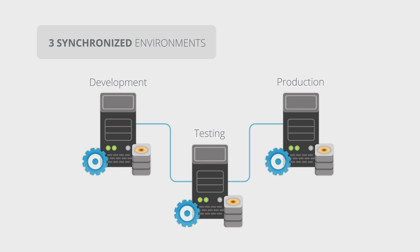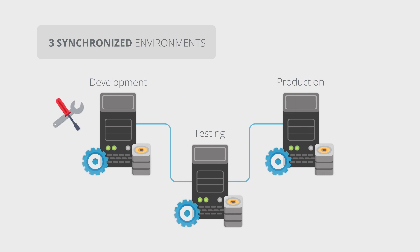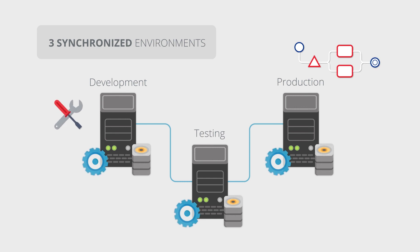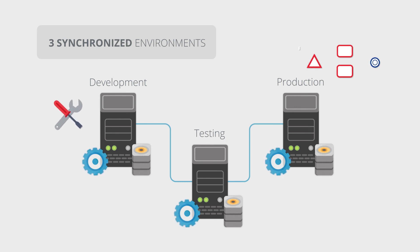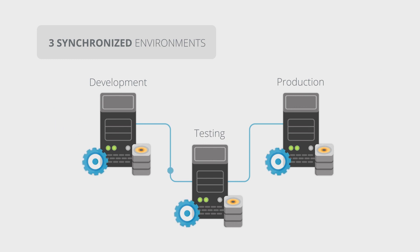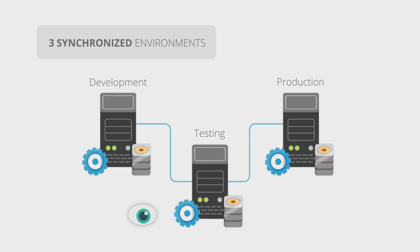Changes can be made in the design and development of processes and sub-processes without affecting those that are already operating and in production. These changes are certified in the testing environments, and if everything is correct, they can be synchronized with the production environments so that all changes take effect.